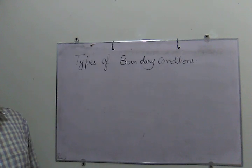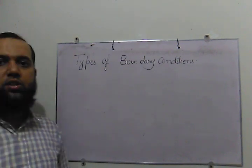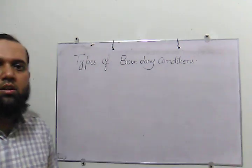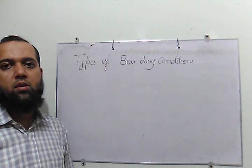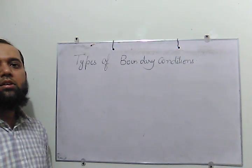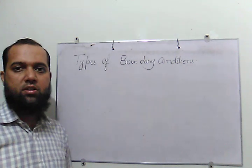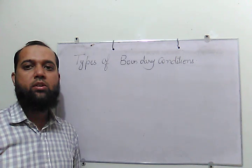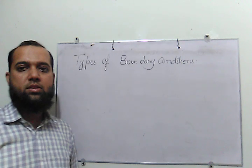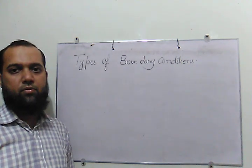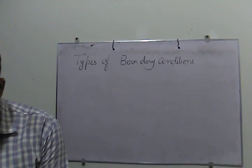Now we are going to talk about the types of boundary conditions for different situations of the heat equation. These boundary conditions will be equally applied on the wave equation as well. The situation for boundary conditions in the form of temperature is applicable on the heat equation and in the wave equation it is applicable in some other form. There are three types of boundary conditions.